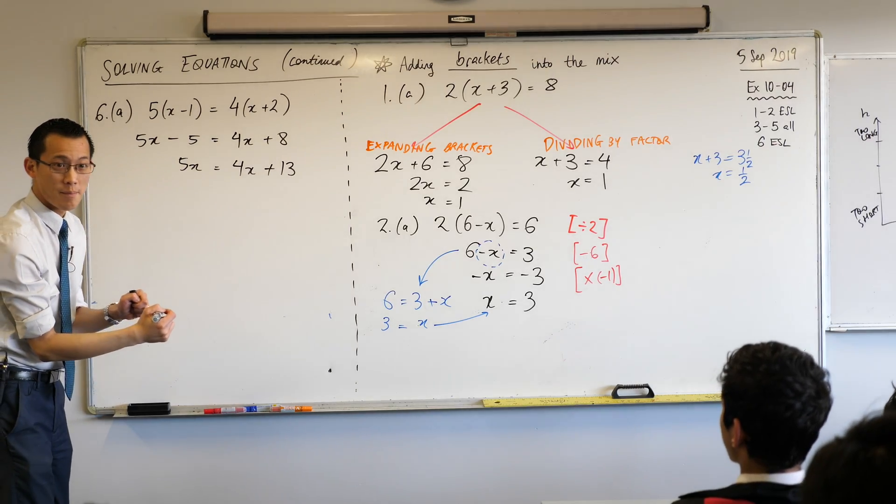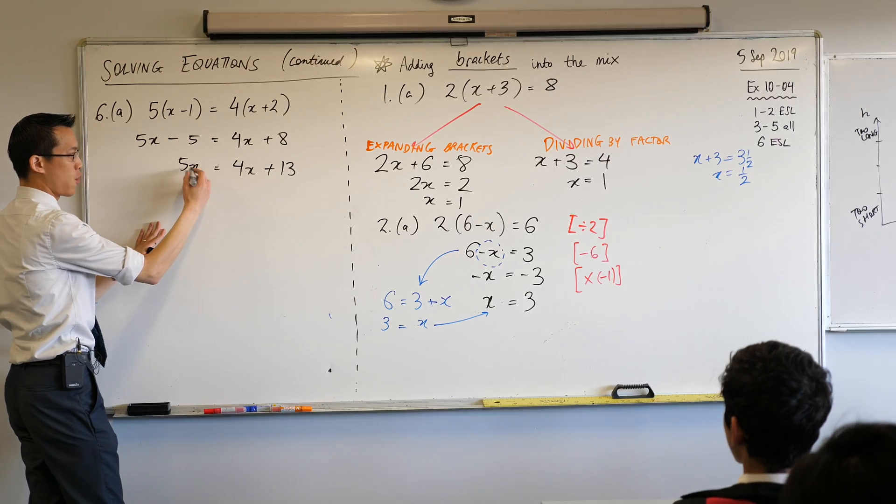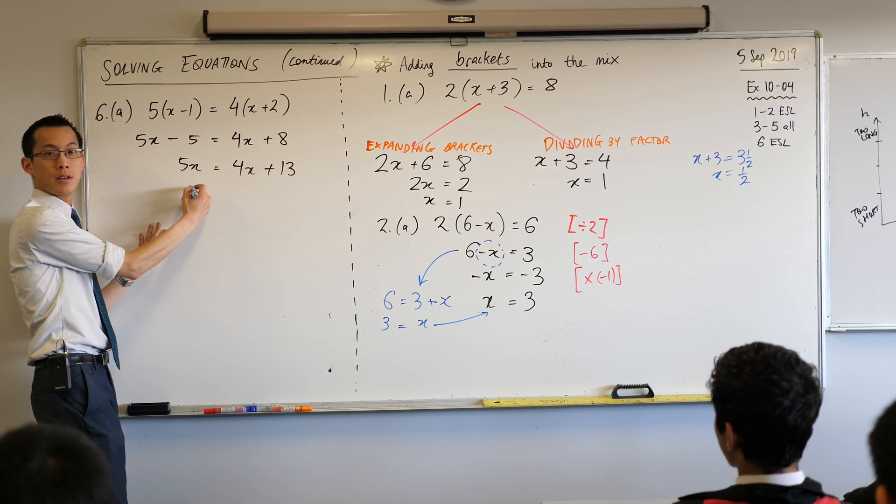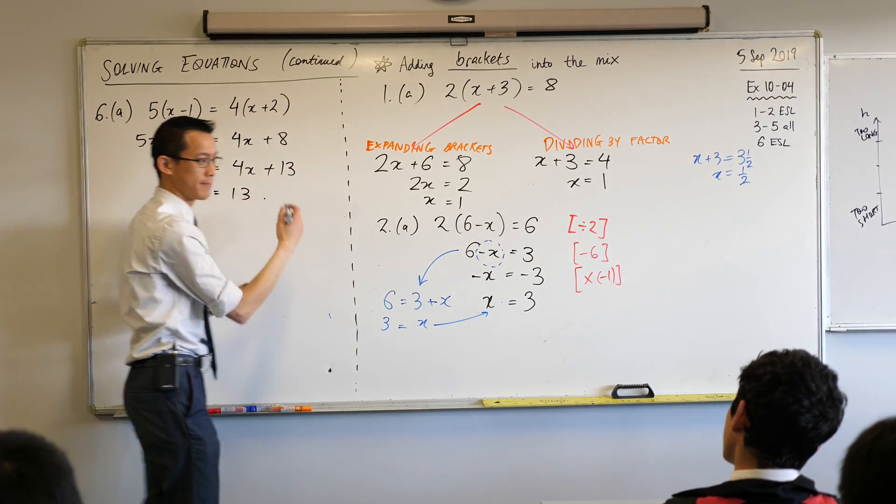Next step, subtract 4x. I want all the pronumerals over here. So I will subtract 4x from here, leaving with how many x's? Just one of them. Equals 13. I'm done.